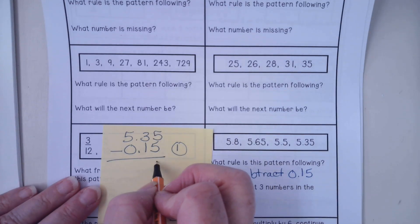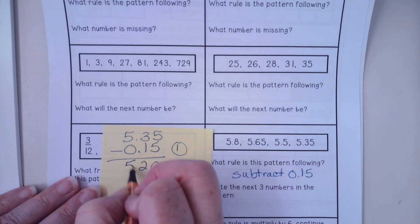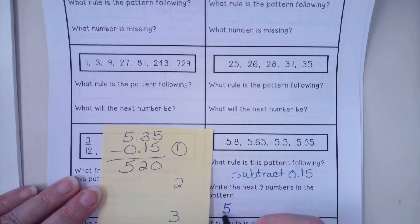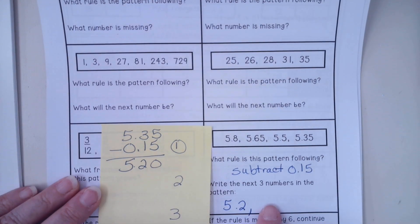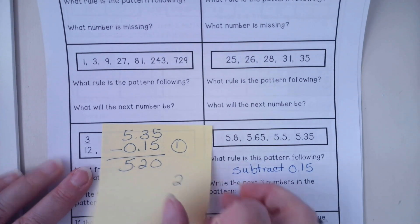So I will give you the first one. The first one is 5.2 and then you have to do the other two.